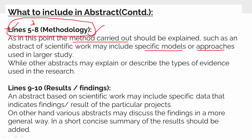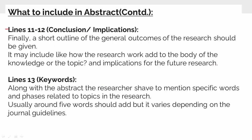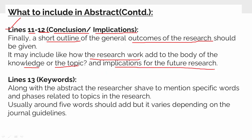You can also describe the types of evidence you have used in that research. After writing about your methodology, the next 2 lines are where you talk about your results or findings, possibly discussed in a short, summarized way. Finally, in the last 2 lines — lines 11 to 12 — you talk about the conclusions and implications of your work: a short outline of the general outcomes, how your research adds to knowledge on that topic, and what the implications are for future research.